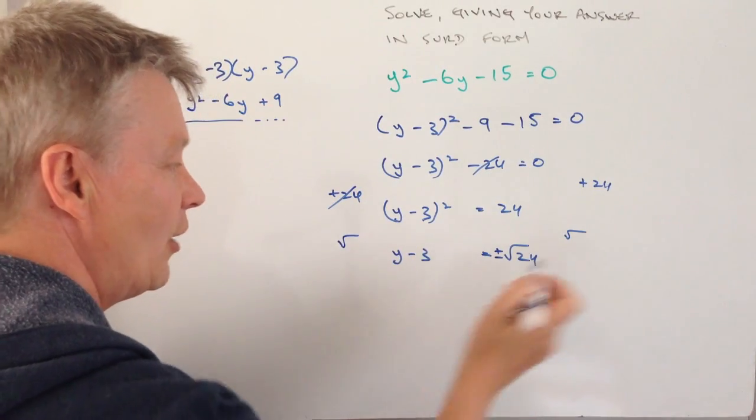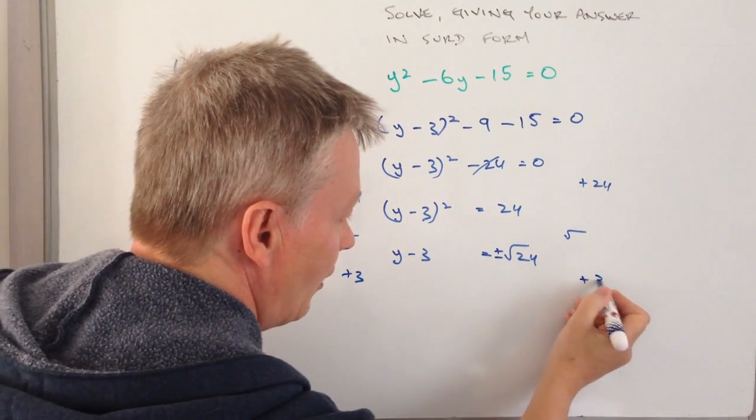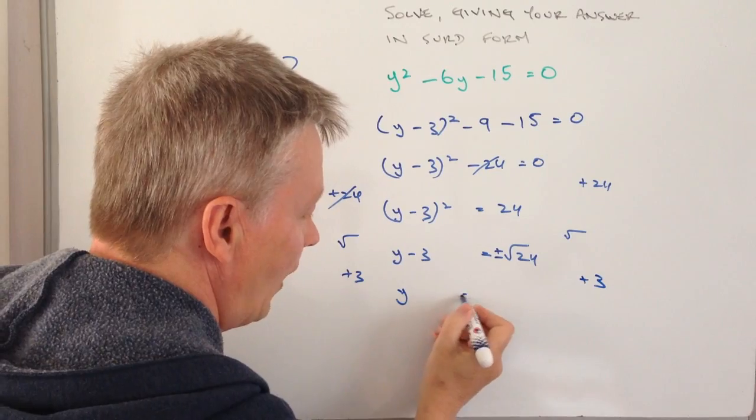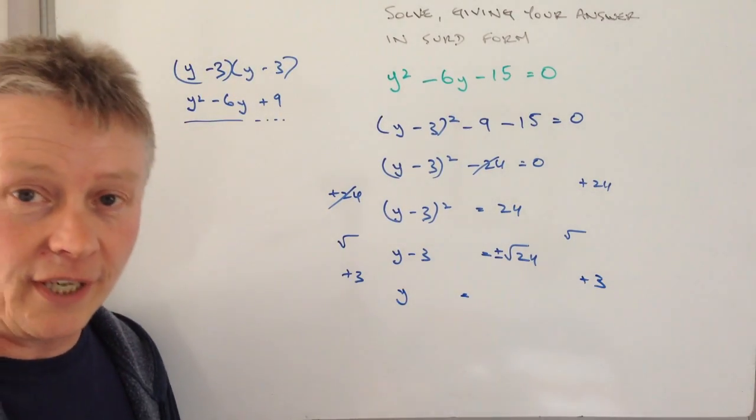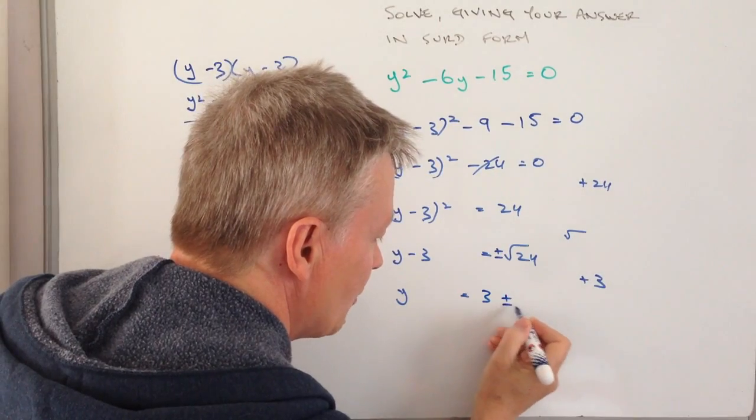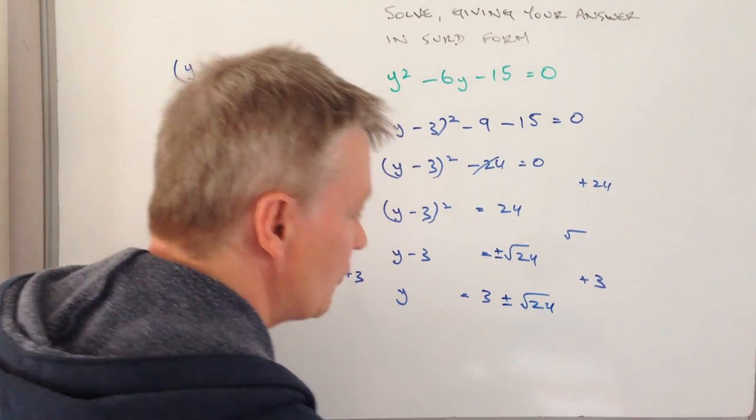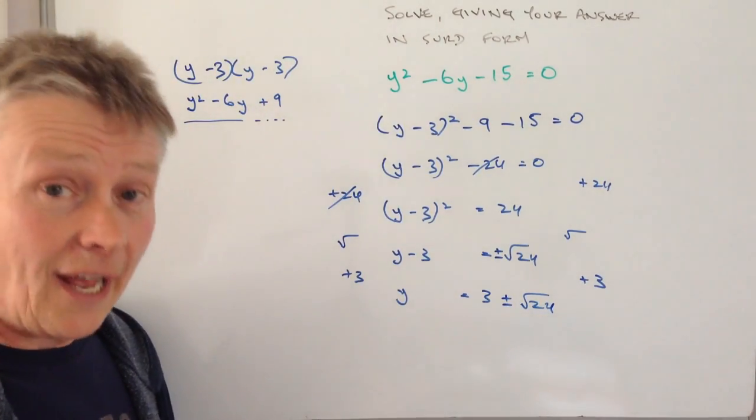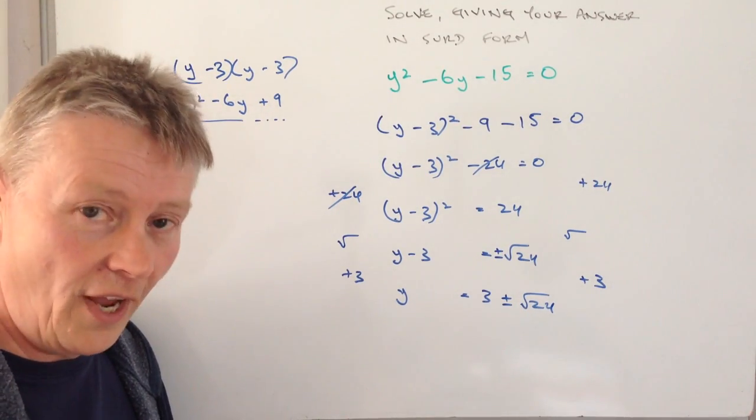Going to get this 3 over to the other side by adding 3. So that means now I've got y on its own, which is exactly what I'm being asked to do. And y equals 3 plus or minus the square root of 24. And that actually answers the question, there's no problem at all with that.